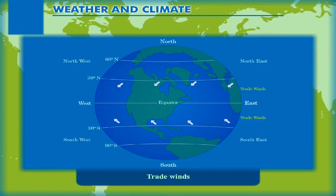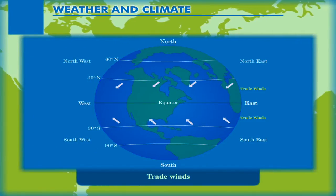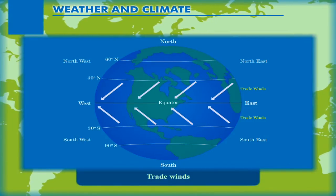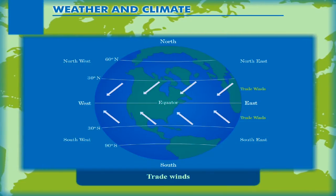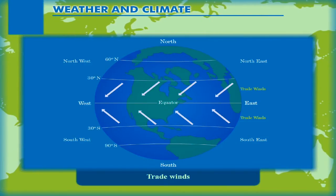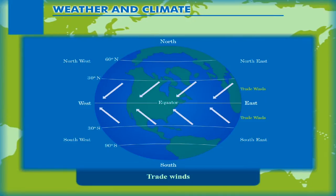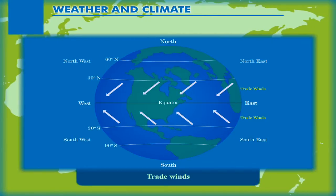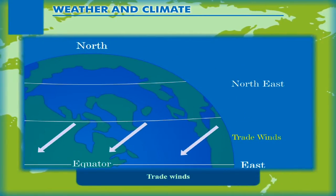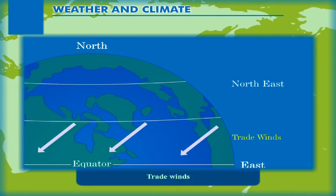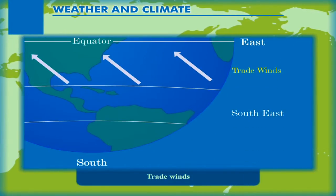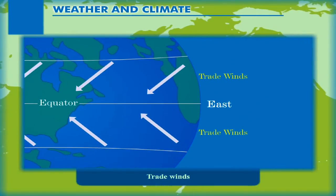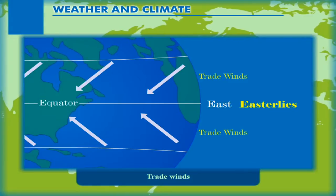Trade winds tend to blow from high pressure to low pressure, but they are deflected to the right in the northern hemisphere and to the left in the southern hemisphere. So, the trade winds blow from subtropical high pressure belts towards equatorial low pressure belts. In the northern hemisphere their direction is north-east, and in the southern hemisphere their direction is south-east. East being the common direction, they are also known as easterlies.